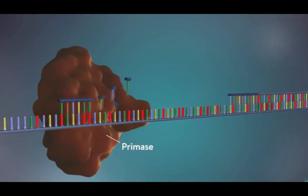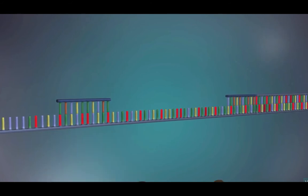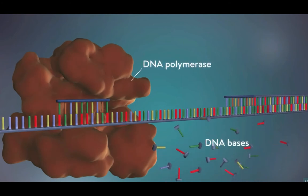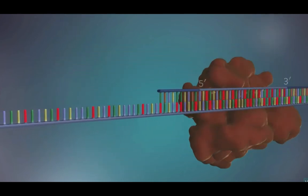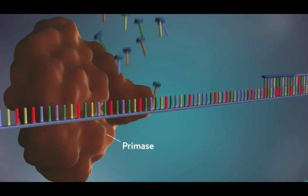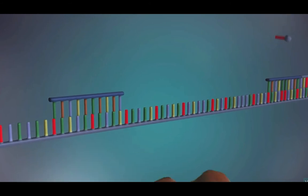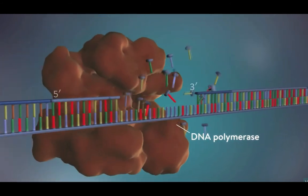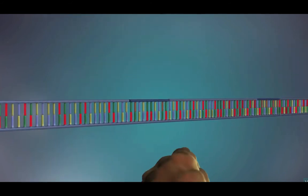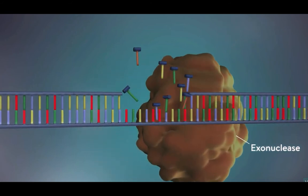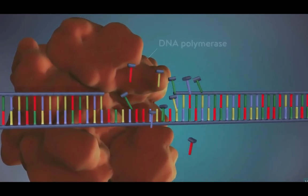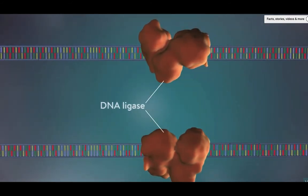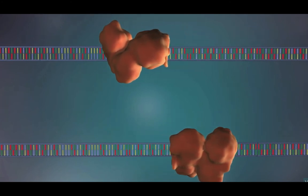DNA polymerase can therefore only make the lagging strand in a series of small chunks called Okazaki fragments. Each fragment is started with an RNA primer, then DNA polymerase adds a short row of DNA bases in the 5' to 3' direction. The next primer is then added further down the lagging strand, another Okazaki fragment is made, and the process is repeated. Once the new DNA has been made, the enzyme exonuclease removes all the RNA primers from both strands. Another DNA polymerase enzyme then fills in the gaps left behind with DNA. Finally, the enzyme DNA ligase seals up the fragments to form a continuous double strand.